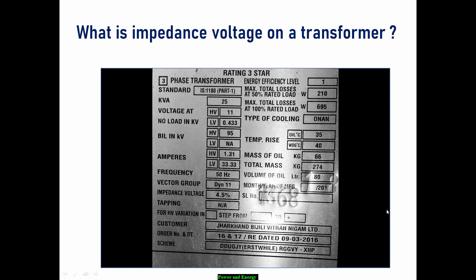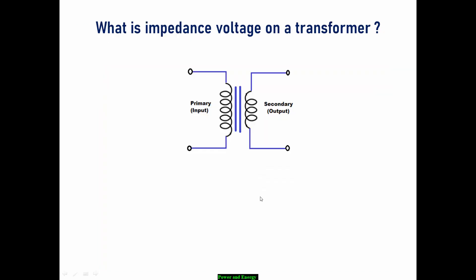Hi everyone, welcome to another tutorial. In this lecture, let us discuss what is impedance voltage on a transformer. Have a look at this nameplate detail. This portion is what I'm talking about - impedance voltage. On this nameplate detail, it is given as 4.5 percentage. In order to have better understanding on this impedance voltage, let us see one simple example.